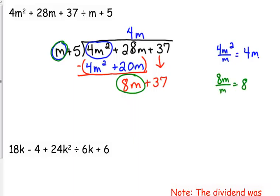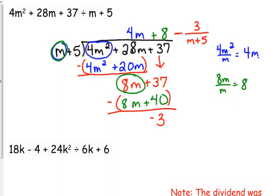Now, we're dividing 8m by m. That gives us just 8. Multiply 8 times m. Multiply 8 times 5. Subtract. 8 minus 8 is 0. 37 minus 40 is negative 3. We finally have a remainder. So, beside our quotient up here, since it's negative, we'll do minus 3 over the divisor. That's how you should always express your remainder.